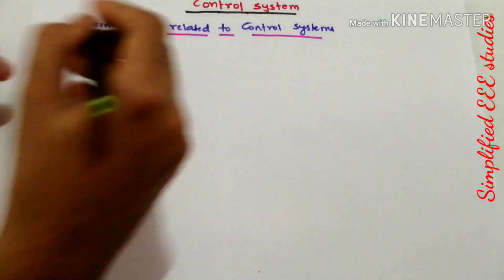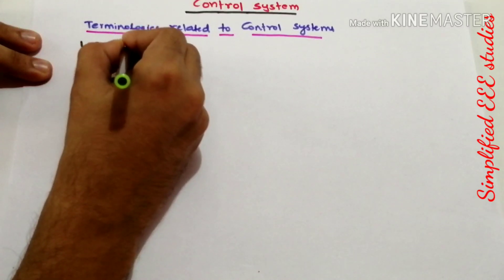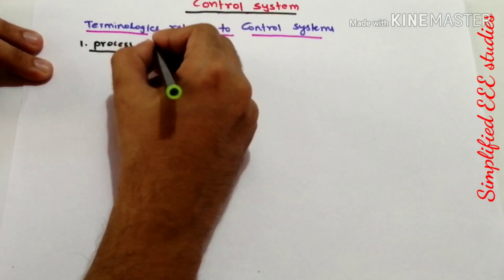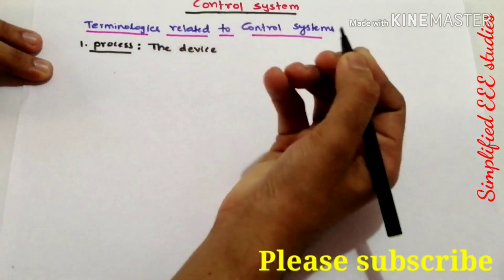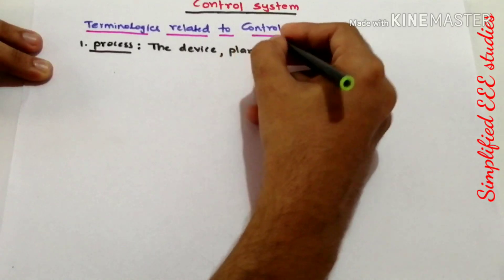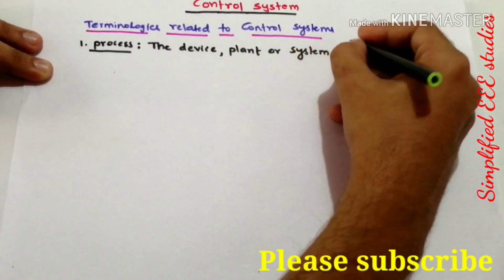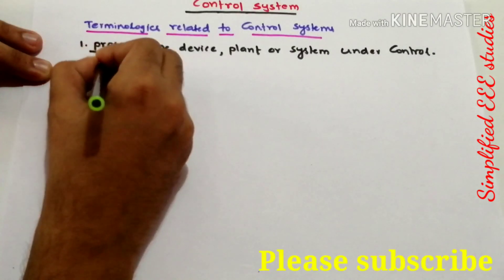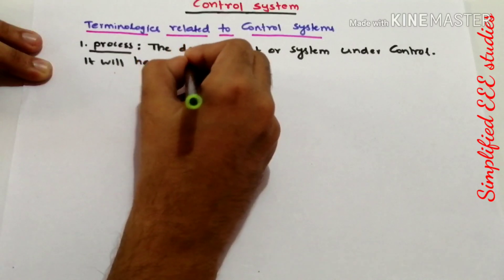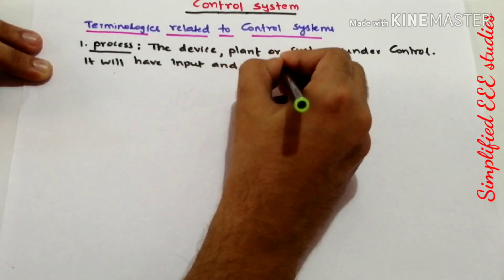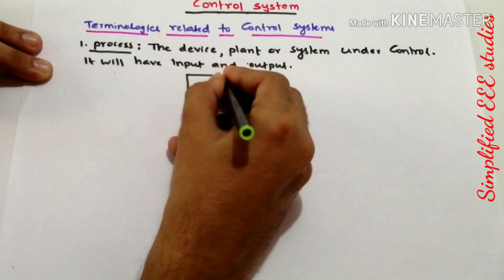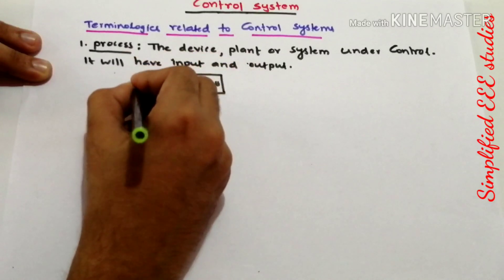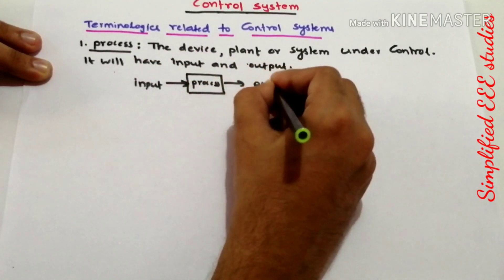The first terminology is process. A process is nothing but the device, plant, or system under control. A process will have input and output. We can represent this with a simple block diagram: input goes into the process block, and the output comes out.